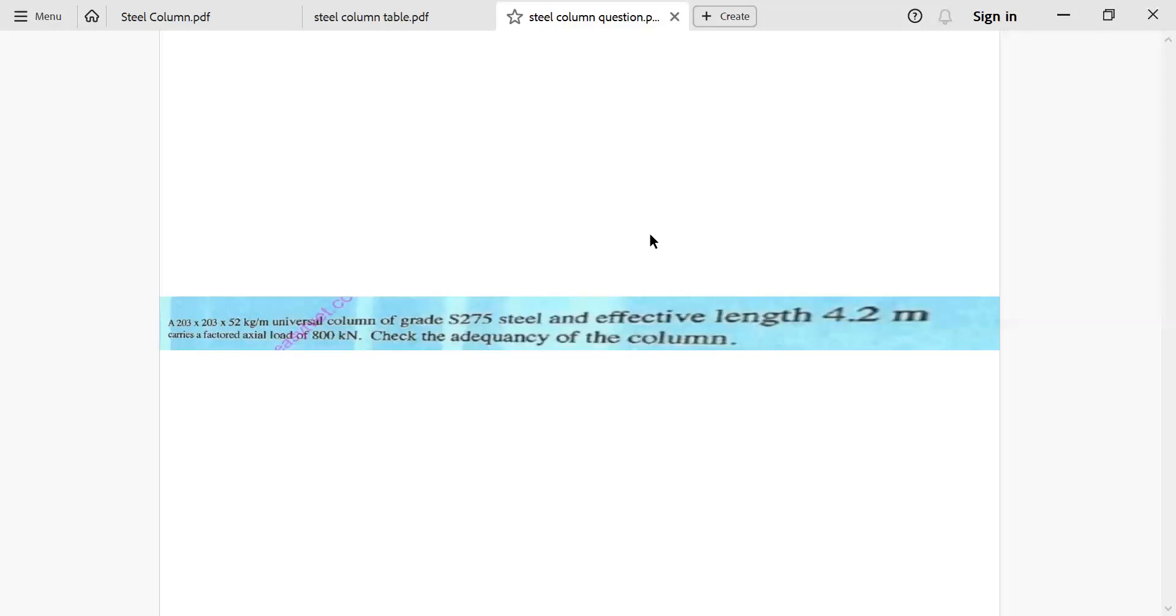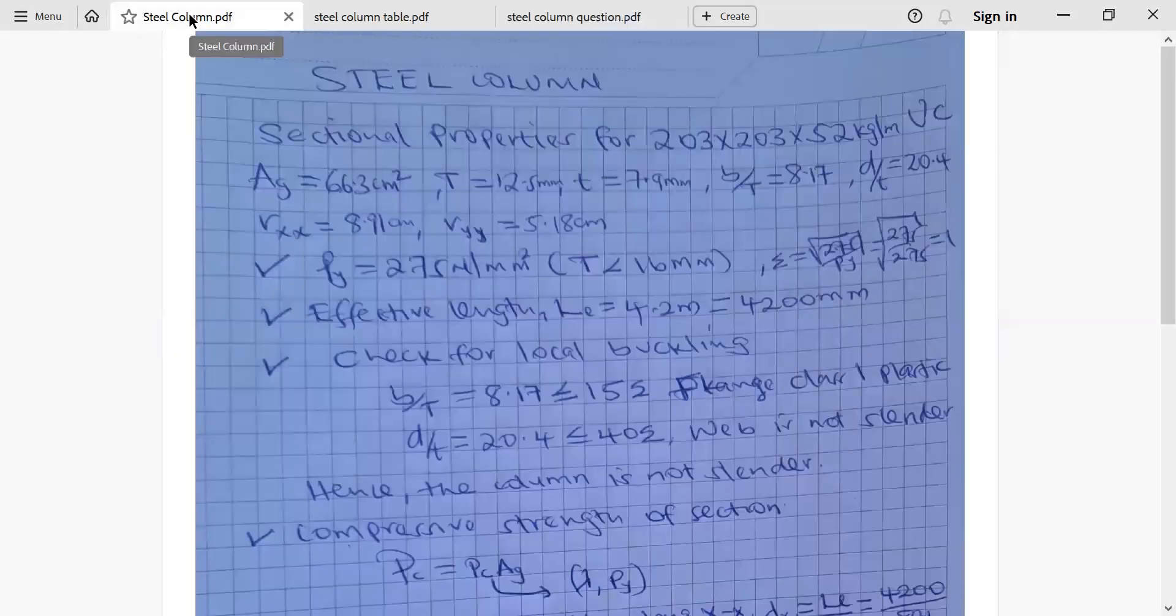Step number one, we'll have to obtain the relevant properties of this column section that we shall use to check its adequacy. This is how we proceed. I'll come here and show you. One of the properties we need is the area of the section. I'll show you in the table.